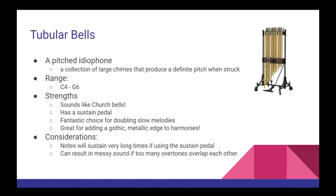Our final instrument for this video are the tubular bells. These instruments have a very heavy and almost iconic sound to them. With a range of C4 to G5, this pitched idiophone is used very often to mimic church bells in music, and they're very effective for doubling slow melodies or for giving a gothic, metallic edge to your harmonies.